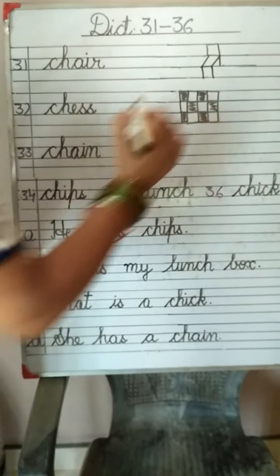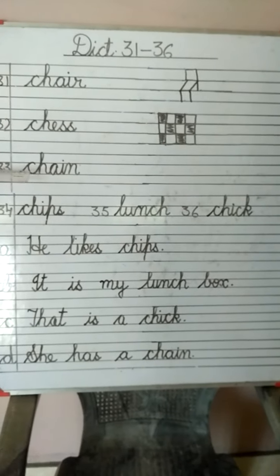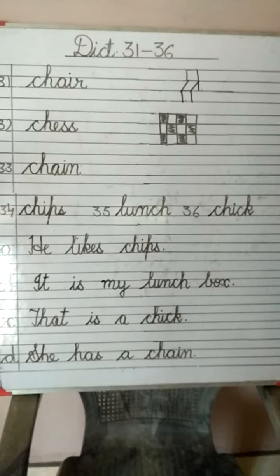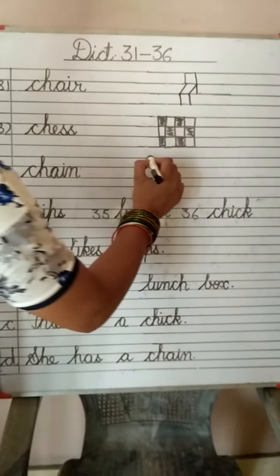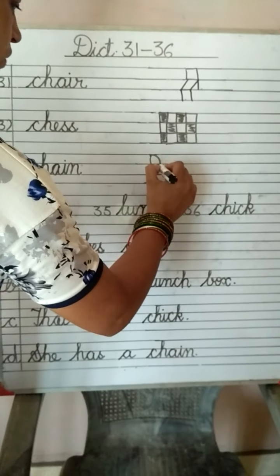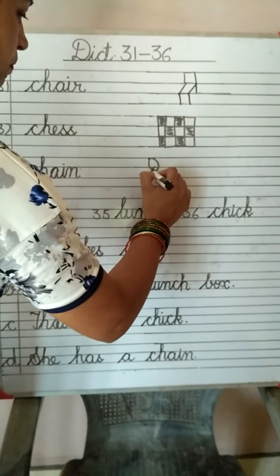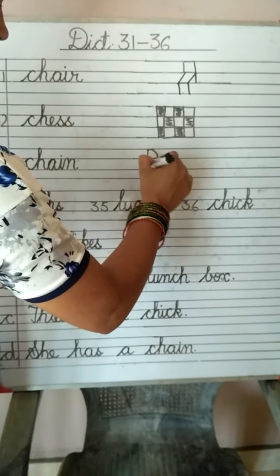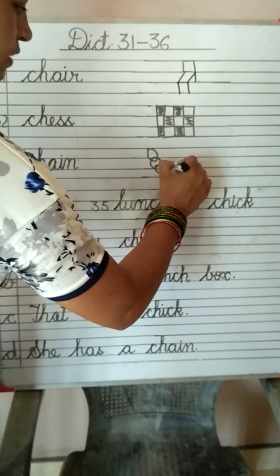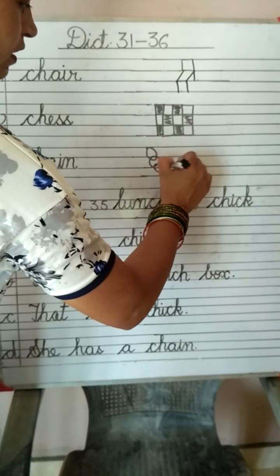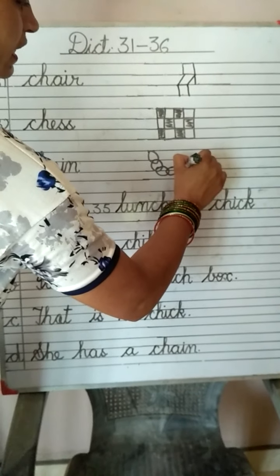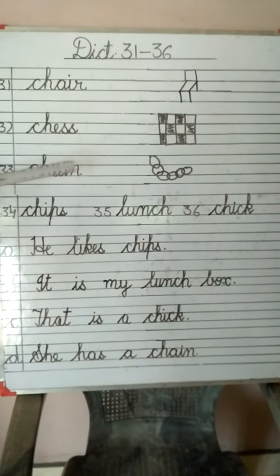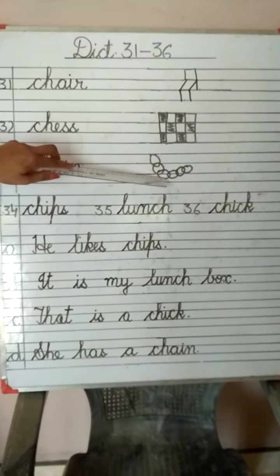Next is C-H-A-I-N. Chain. For chain you will draw oval shapes — circles passing through each other in this way. You will fill a light color in the chain to show that this is a silver chain.